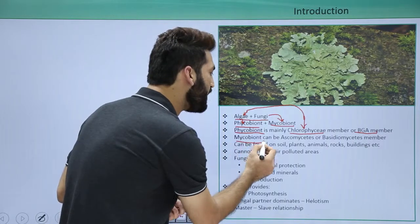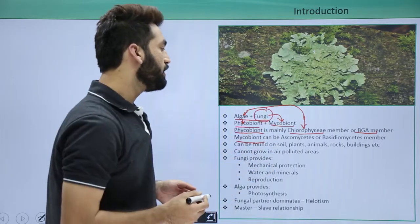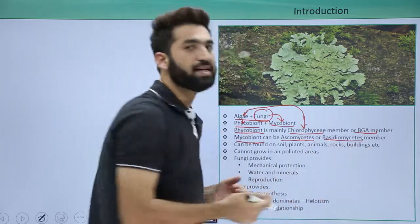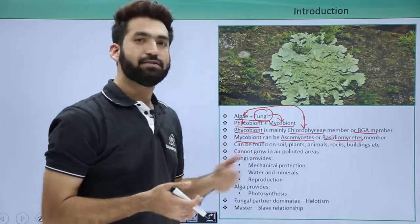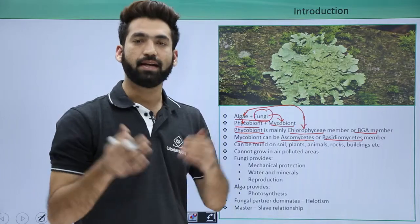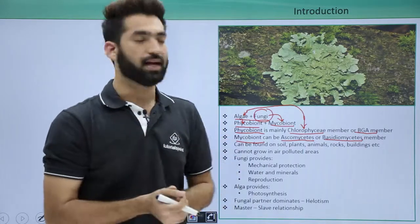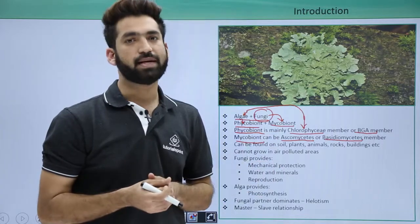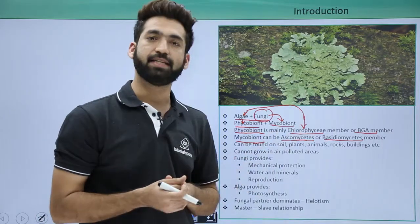And when you talk about mycobiont, the fungal partner, the mycobiont can be from Ascomycetes or it can be from Basidiomycetes. If it is from Ascomycetes, the lichen is called Ascolichen. If it is the member of Basidiomycetes, if the fungus is the member of Basidiomycetes, the lichen is called Basidiolichen.